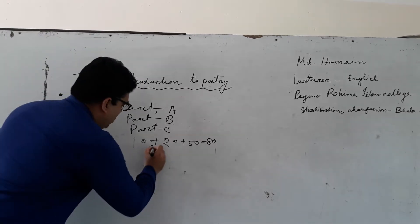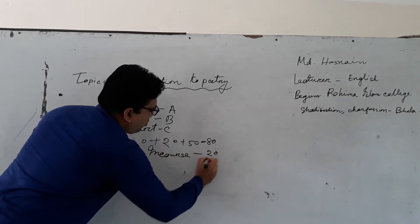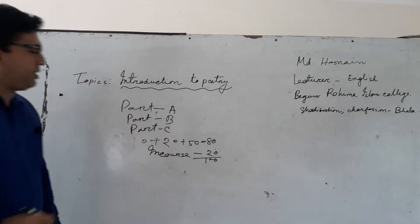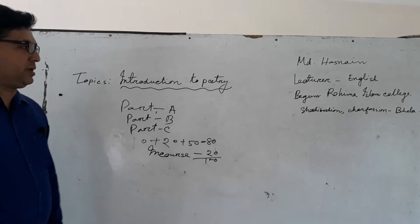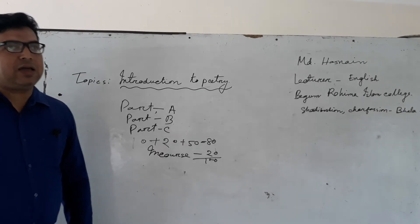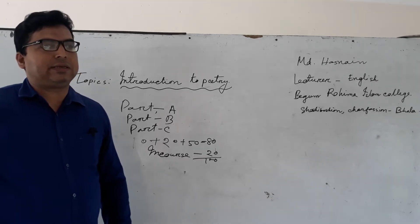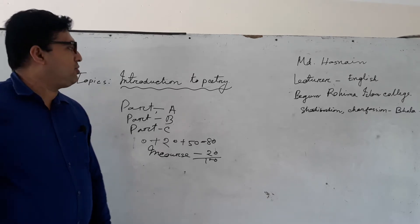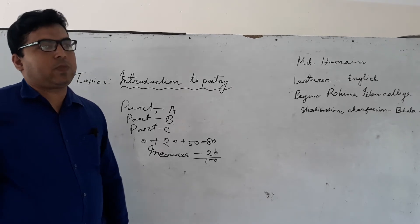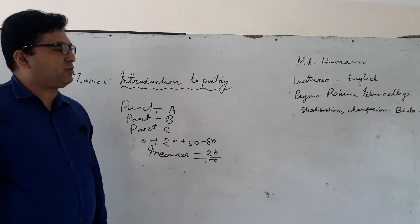In-course marks total about 100 marks. This is the mark distribution I am telling you. Now I will go to another topic. I am going to start the syllabus — introduction to poetry for our first year, under National University.